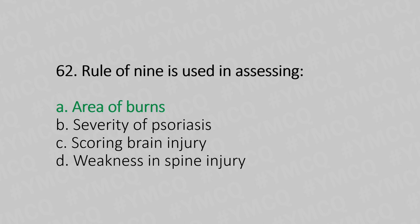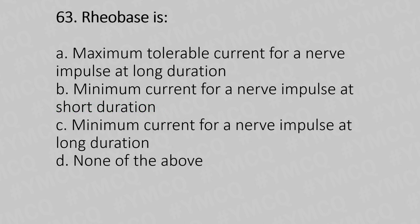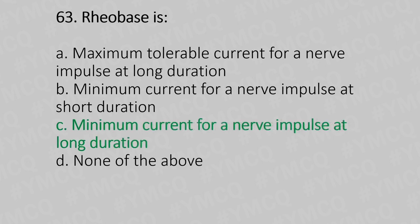Question 63: Rheobase is — Option A: maximum tolerable current for a nerve impulse at long duration, Option B: minimum current for nerve impulse at short duration, Option C: minimum current for nerve impulse at long duration, Option D: none of the above. The answer is Option C, minimum current for nerve impulse at long duration.